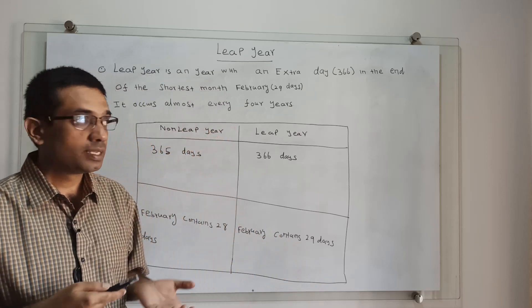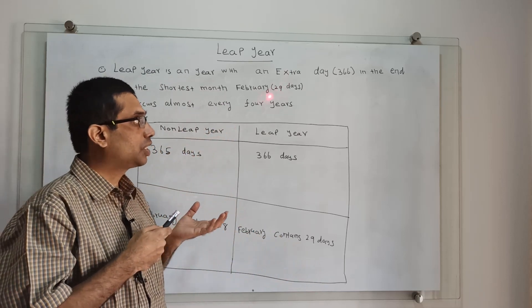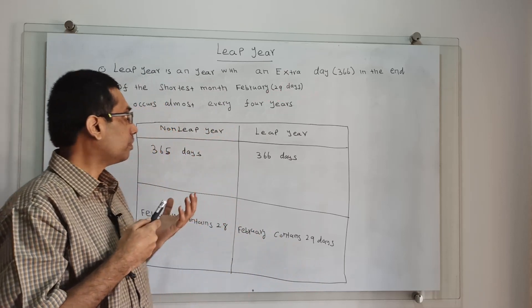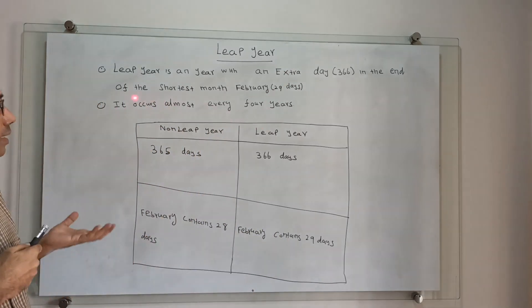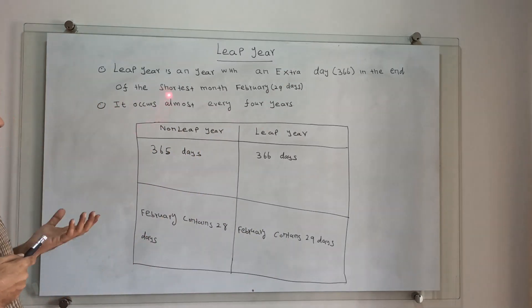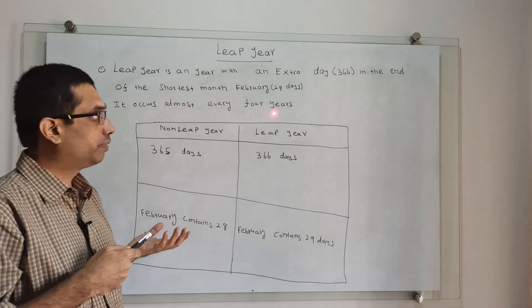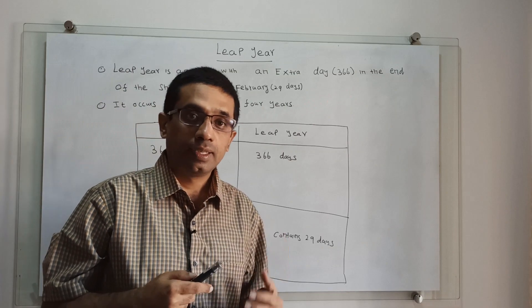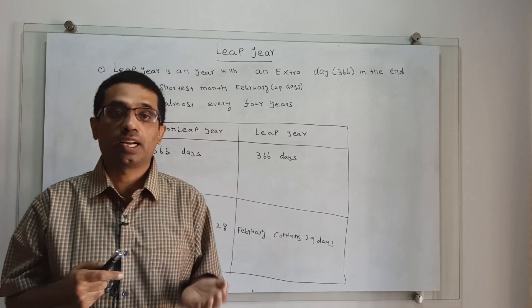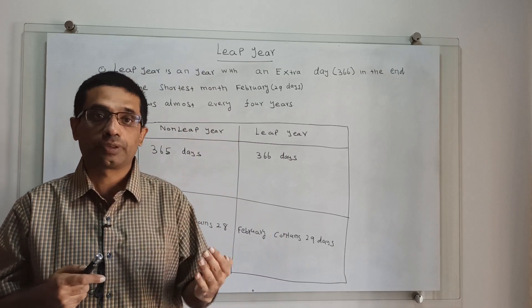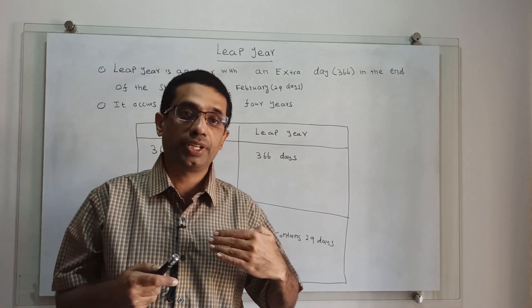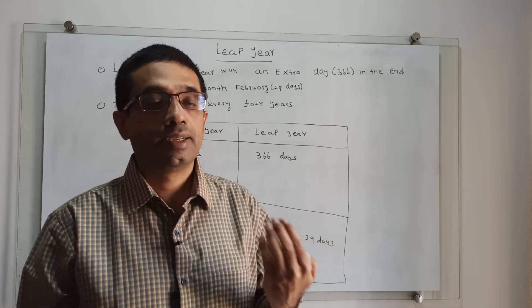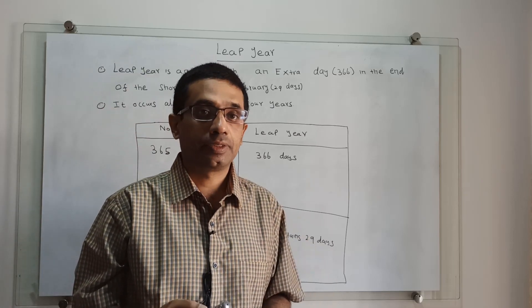For non-leap years, February contains only 28 days. The leap year occurs almost every 4 years — every 4 years the leap year will occur again and again.